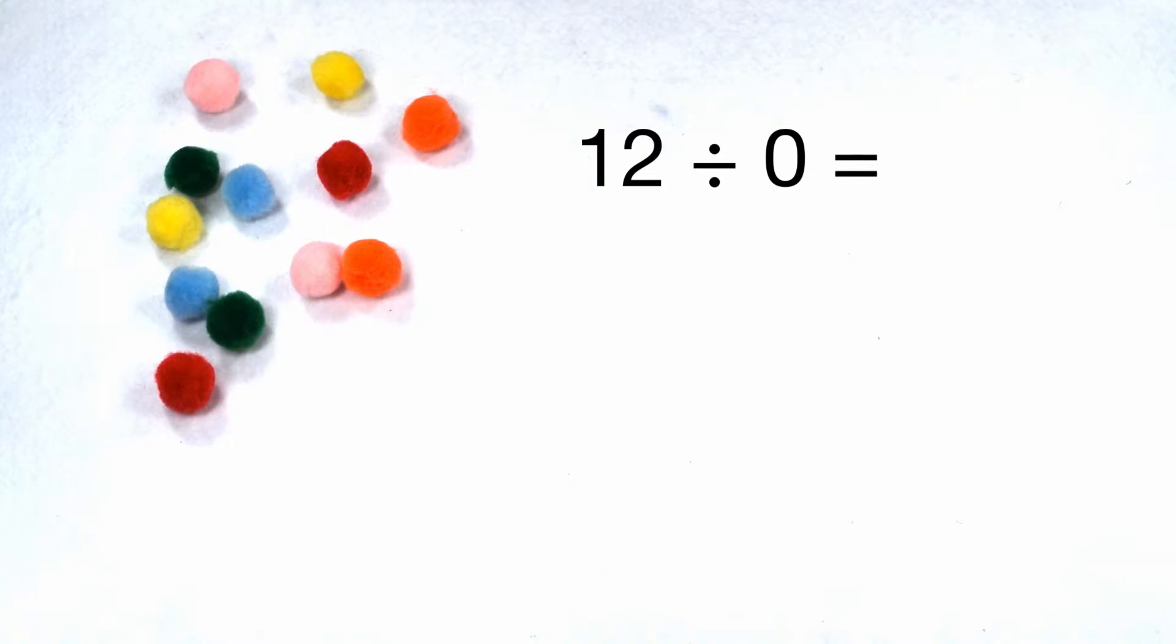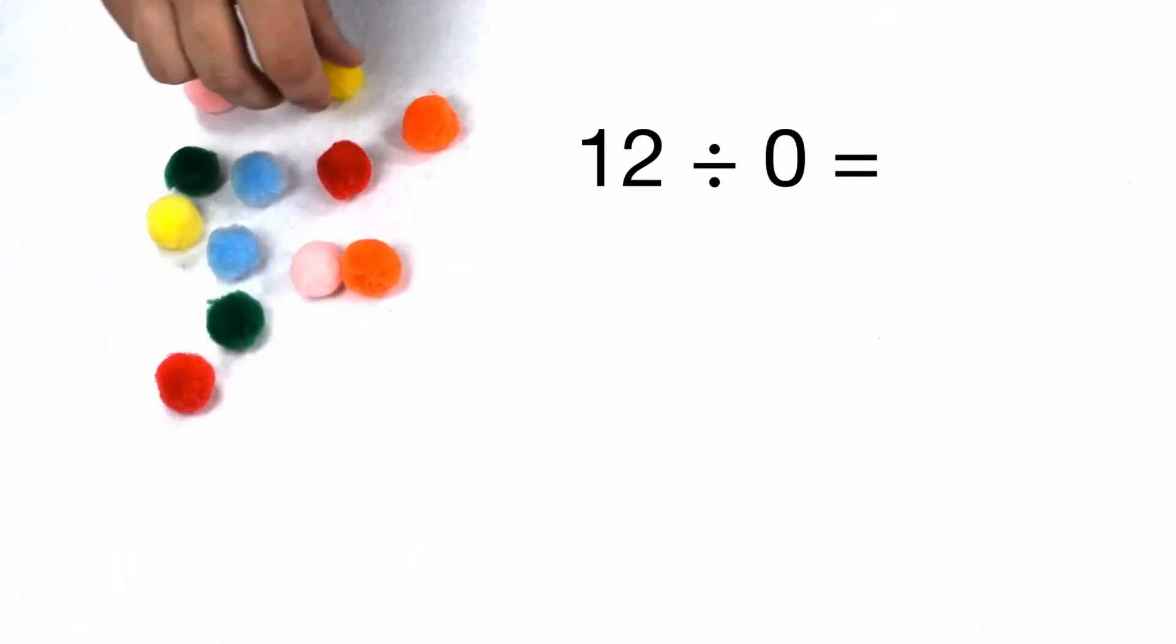We have more in our dividend, but our divisor is still putting them into zero groups. So I still don't have any actual groups to move my items to.